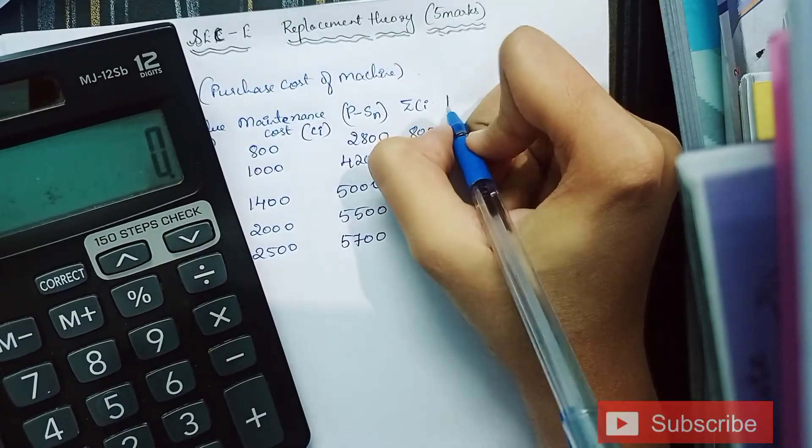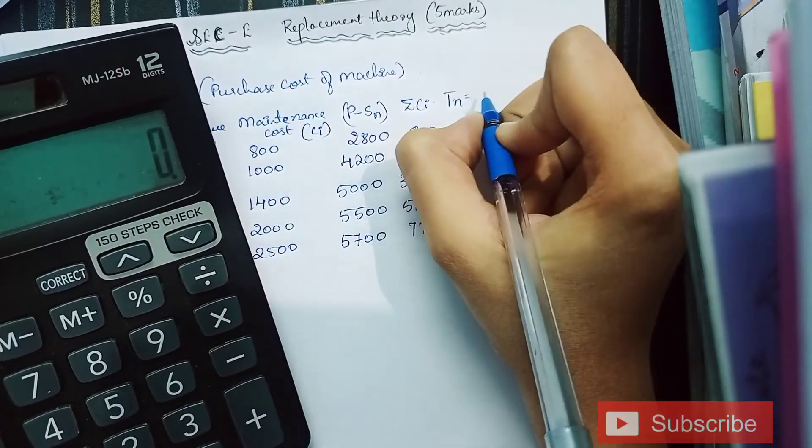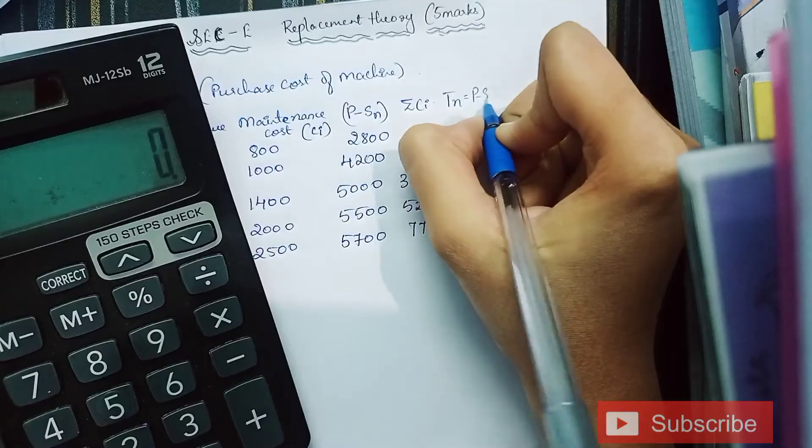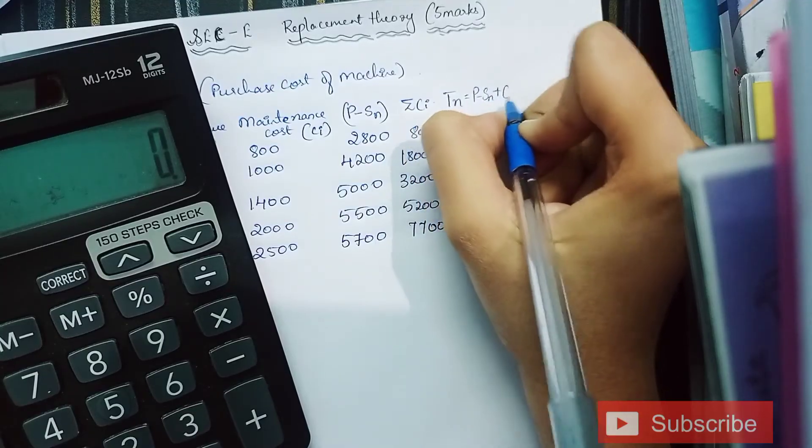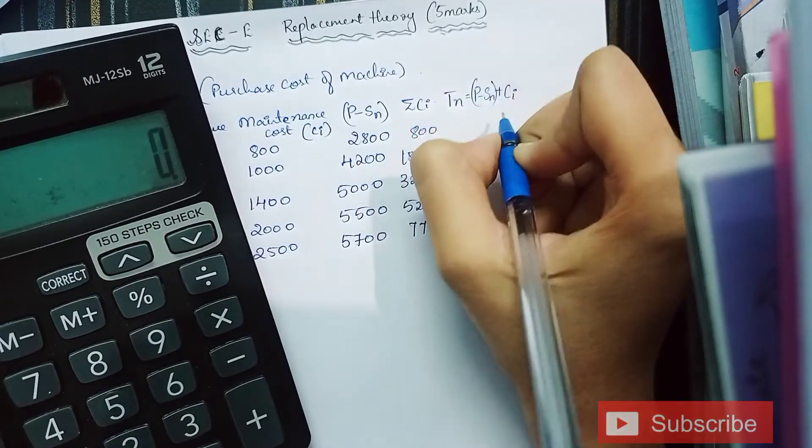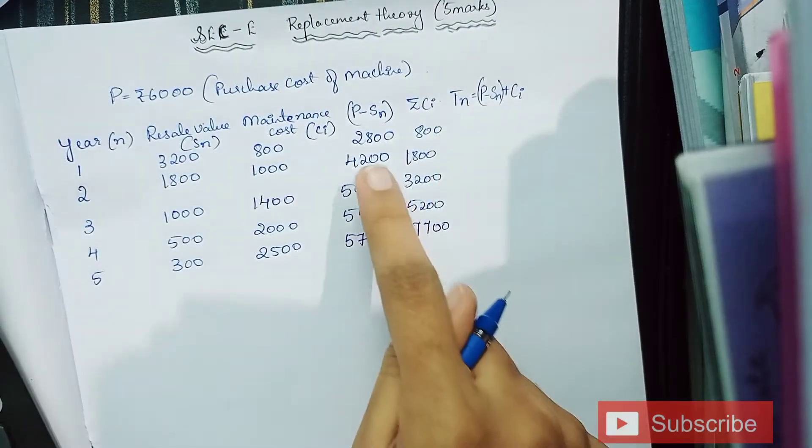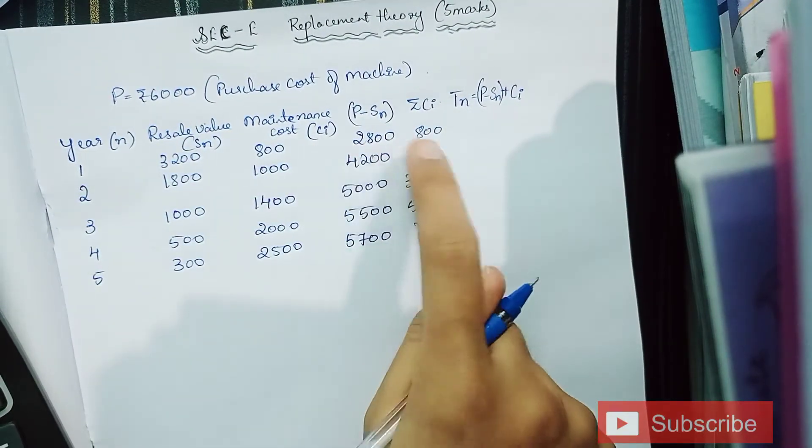The last but one column is TN, which is nothing but P minus SN plus summation CI. So add these respective values.